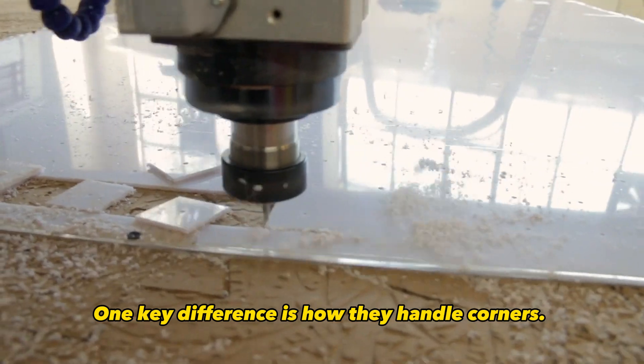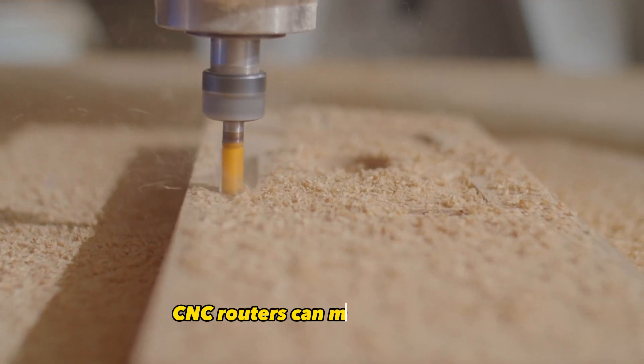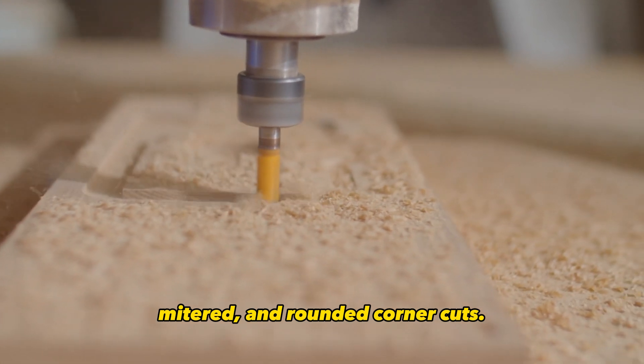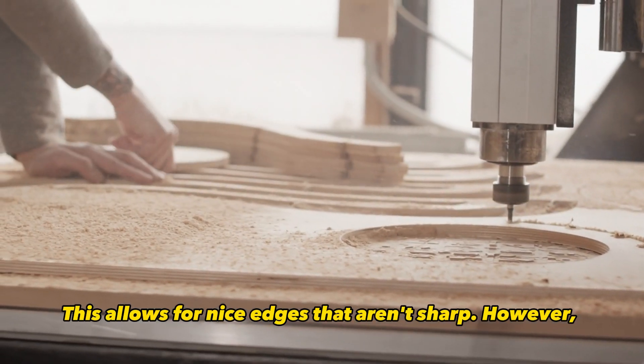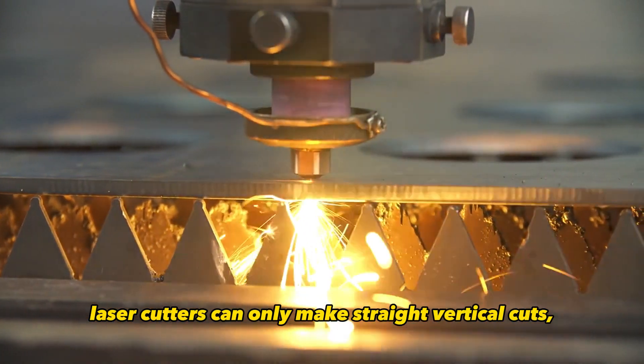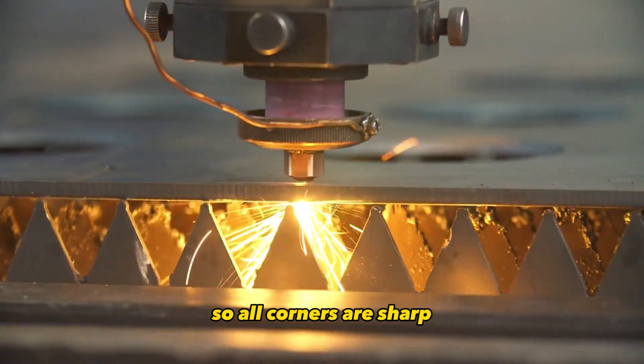One key difference is how they handle corners. CNC routers can make beveled, mitered, and rounded corner cuts. This allows for nice edges that aren't sharp. However, laser cutters can only make straight vertical cuts, so all corners are sharp right angles.